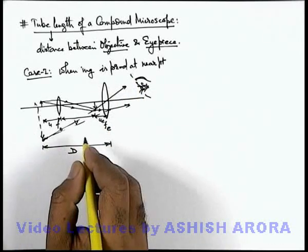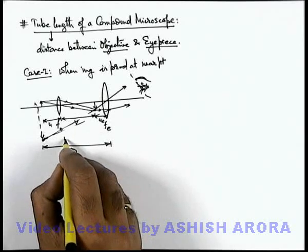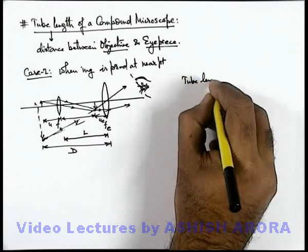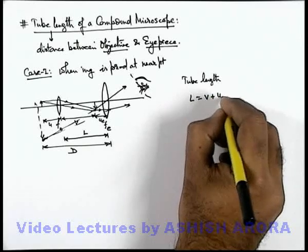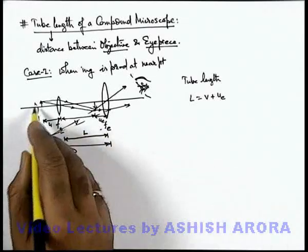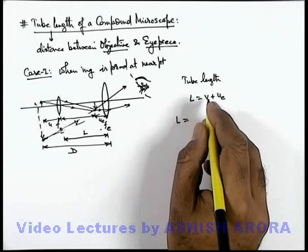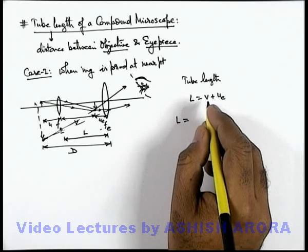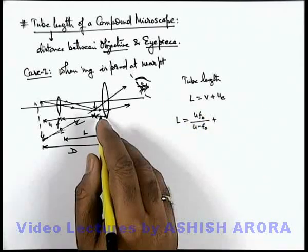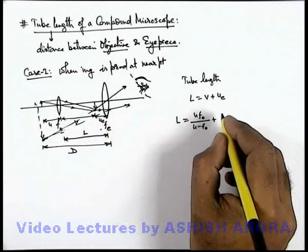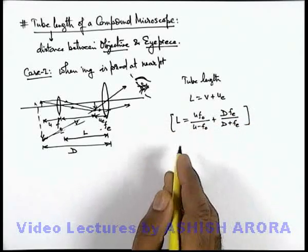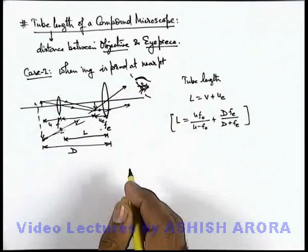In this situation, the tube length is the distance between the two lenses, termed L. We can write tube length L = v + u_e. The values of v and u_e can be substituted in terms of f_o, f_e, and u (the object distance from the objective). The value of v is u·f_o / (u − f_o), plus the distance u_e of the intermediate image from the eyepiece, which is d·f_e / (d + f_e). This is the tube length used when the image is produced at the near point in a compound microscope.